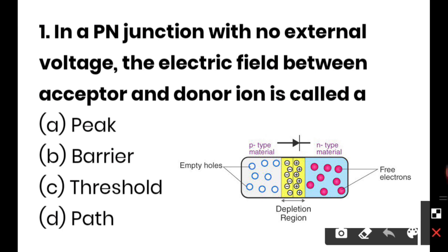In a PN junction diode with no external voltage, the electric field between acceptor and donor ions is called: option A is peak, option B is barrier, option C is threshold, and option D is path. The correct option is barrier. When no external voltage is applied, the electric field is developed by the acceptor and donor ions.